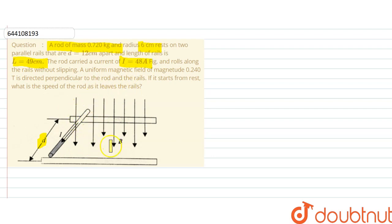A uniform magnetic field of magnitude 0.240 tesla is directly perpendicular to the rod as well as the rails. The rod starts from rest. What is the speed of the rod as it leaves the rail?